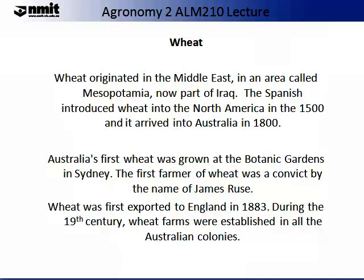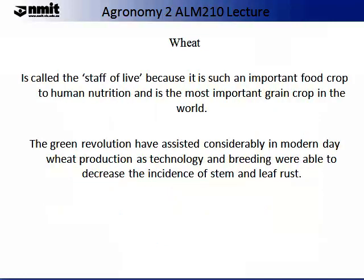Wheat farms were established in all the Australian colonies. It is by no accident that wheat is often called the staff of life, because it is such an important food crop to human nutrition, and is one of the most important grain crops in the world. One of the reasons it became so important was due to the Green Revolution, which provided modern wheat production technology and breeding that decreased the incidence of diseases such as stem and leaf rust. Extensive breeding of wheat has also enabled the removal of the husk, which is much easier now than it used to be.